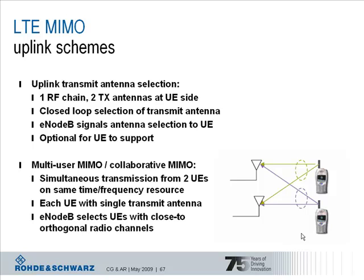Another scheme used in the uplink is the so-called multi-user MIMO or collaborative MIMO supported in LTE. Two UEs actually transmit simultaneously over the same time-frequency resources, as indicated in this small picture. The UEs are scheduled by the base station, which needs to decide whether this is actually possible or not. Each UE just needs to have one transmit antenna in this case.